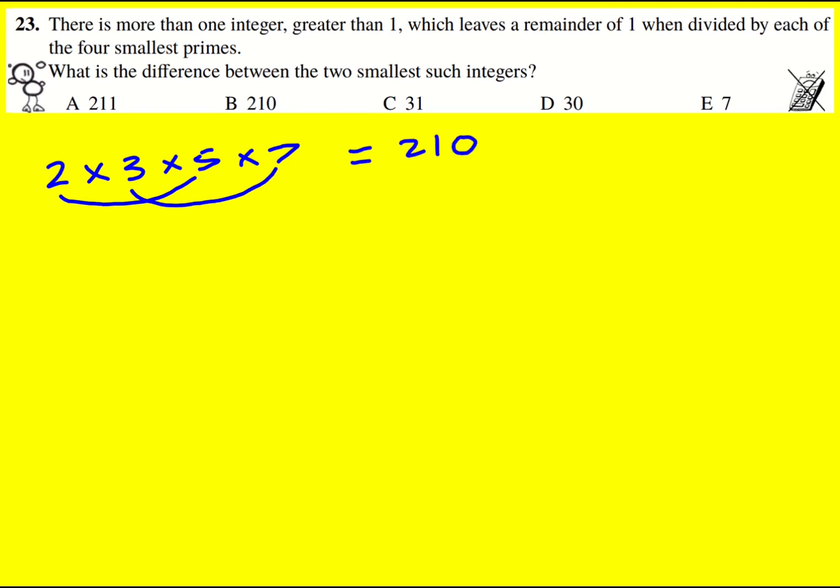Okay, so that number is divisible by each of the four smallest primes, so all I've got to do to leave a remainder of 1 is to add 1 onto it. That's going to be the smallest possible number.